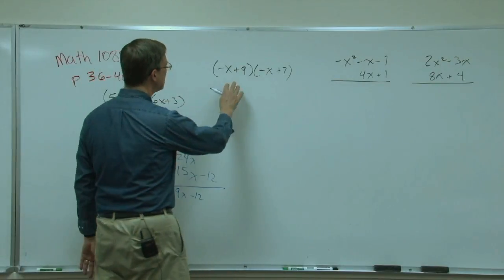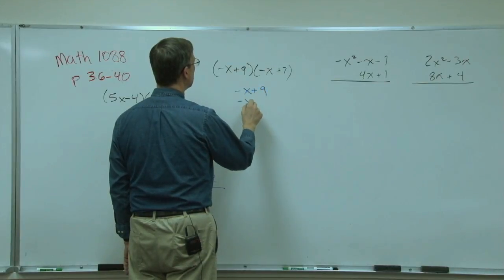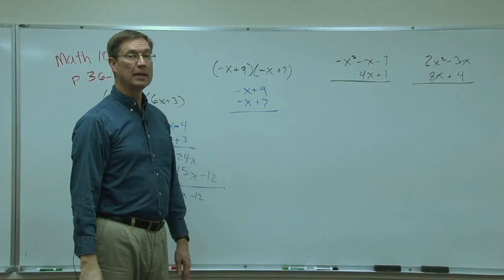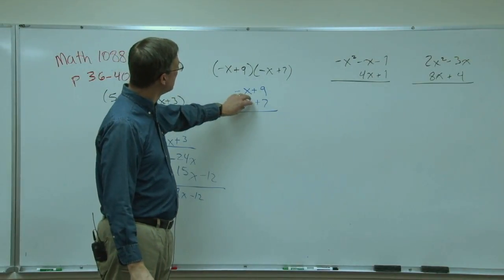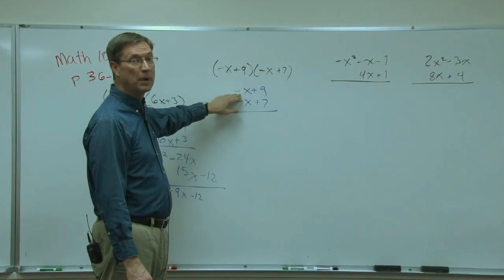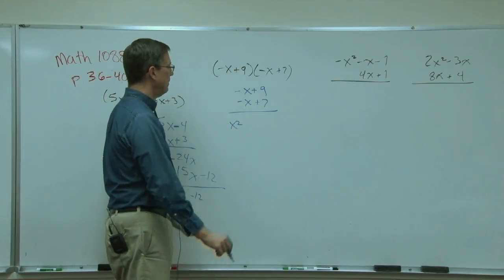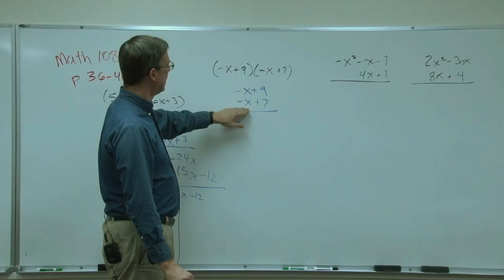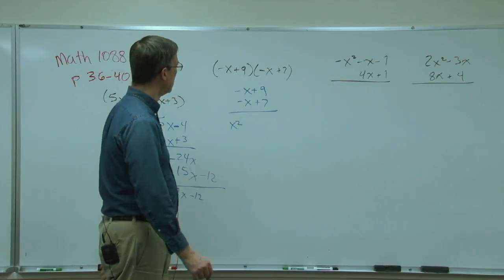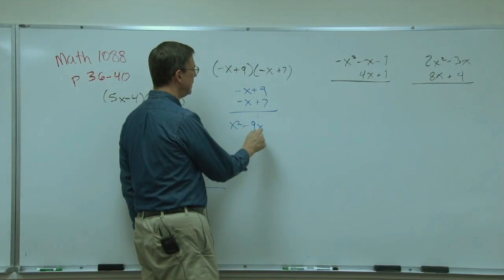All right, let's take this one. We'll put the negative x plus 9 on the top, negative x plus 7 on the bottom, and again, let's multiply the negative x times both of these. A negative times a negative means it's positive. There's no number, so it's just plain old x squared. Negative x times 9. So we first go straight up, and then go this way. So it's going to be negative, because it's a negative times a positive, negative 9x.